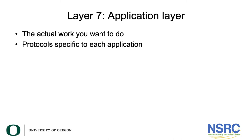We keep those layers in the model because some networks and technologies do provide these functions — it's a useful reference model. At the very top we have Layer 7, the Application Layer, which represents the actual job you wanted to do across the network. For example, if you wanted to view a web page, at Layer 7 there will be a different application protocol specific to each type of job you want to do.